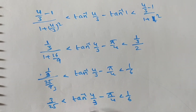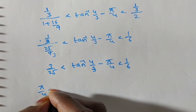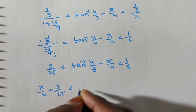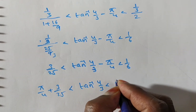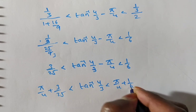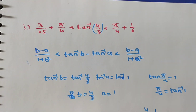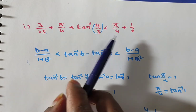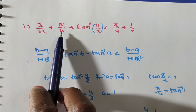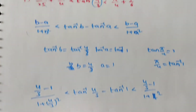Now add pi/4 to the entire inequality. Then we get: pi/4 plus 3/25 is less than tan inverse(4/3) is less than pi/4 plus 1/6. Hence proved. Here we substituted b = 4/3 and a = 1 (since tan inverse 1 = pi/4).